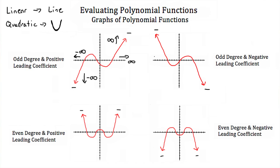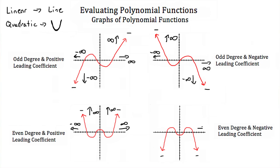But if we take that odd-degree polynomial and multiply it by a negative leading coefficient, this is reversed. If we go out to negative infinity on the x-axis, then our function goes to positive infinity; and if we go to positive infinity on the x-axis, our function goes toward negative infinity. For even-degree polynomials with a positive leading coefficient, as we go to either positive or negative infinity, the function always heads toward infinity. But with a negative leading coefficient, no matter which direction along the x-axis, our function heads toward negative infinity.